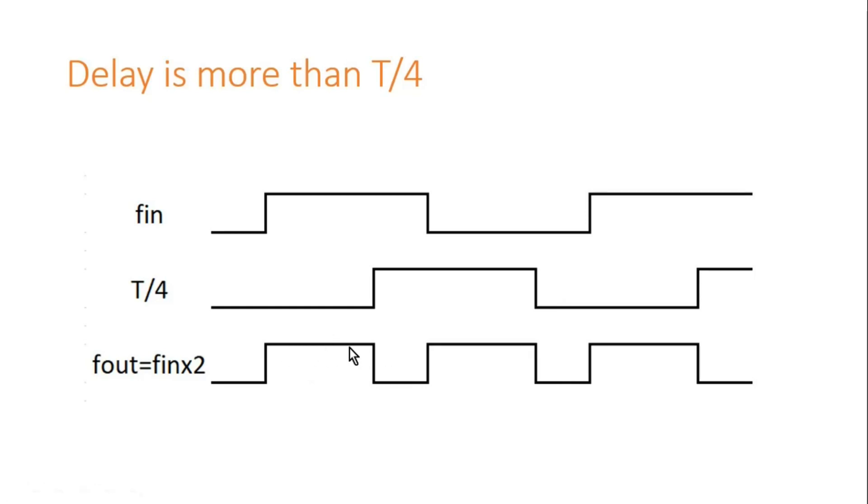If you observe this waveform very clearly, ton is increased, that means duty cycle is increased. So conclusively we can say that by controlling the delay, frequency will be unchanged but we can control the duty cycle of the output signal. Or in other words, if you cannot control the delay very precisely, your frequency will be still multiplied by 2 only but your duty cycle will be changed.